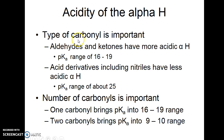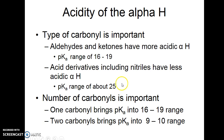The type of carbonyl that you have adjacent to that alpha carbon is important. Aldehydes and ketones have a more acidic proton than acid derivatives — their pKa is in the range of 16 to 19. Something like nitriles and esters have a pKa range of about 25, so you need a stronger base with them than you do with aldehydes and ketones.